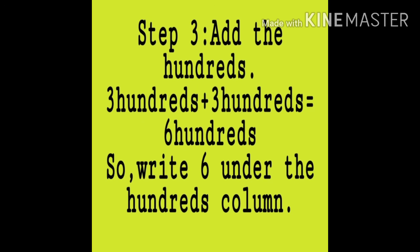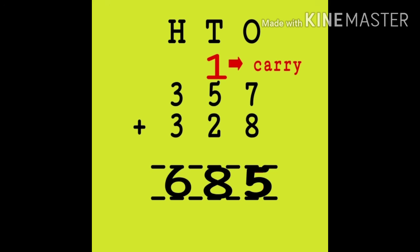Now let's come to step number 3: add the hundreds. 3 hundreds plus 3 hundreds equals to 6 hundreds. So we will write 6 under the hundreds column. 3 plus 3 equals to 6. Therefore, 357 plus 328 equals to 685.